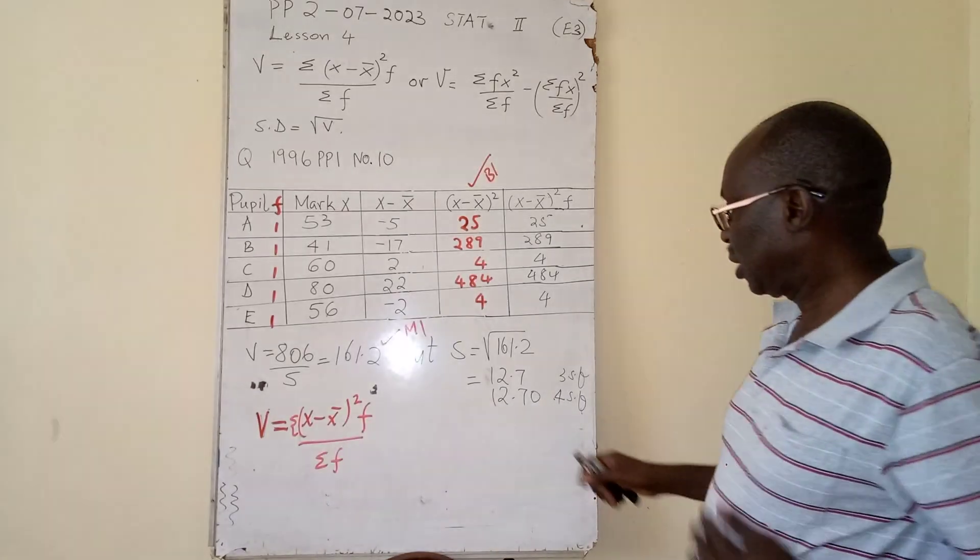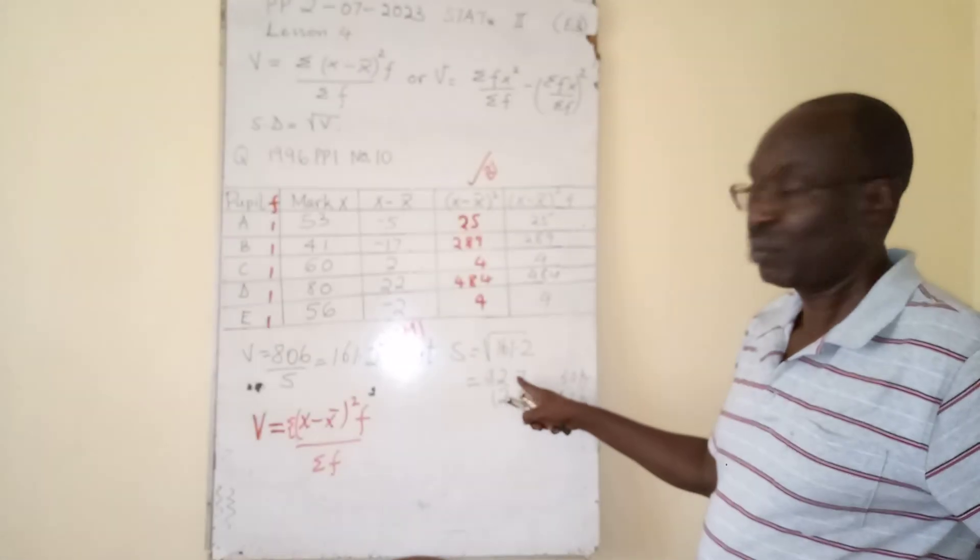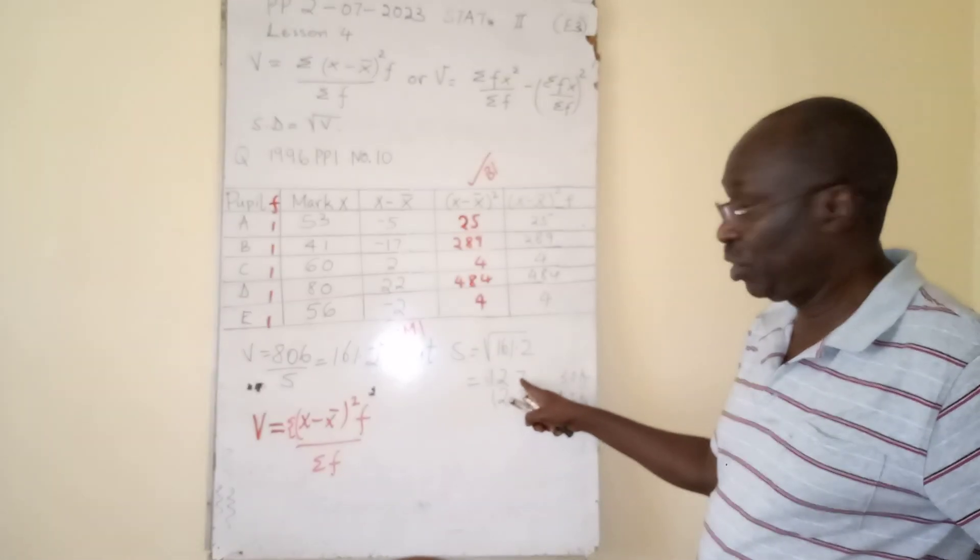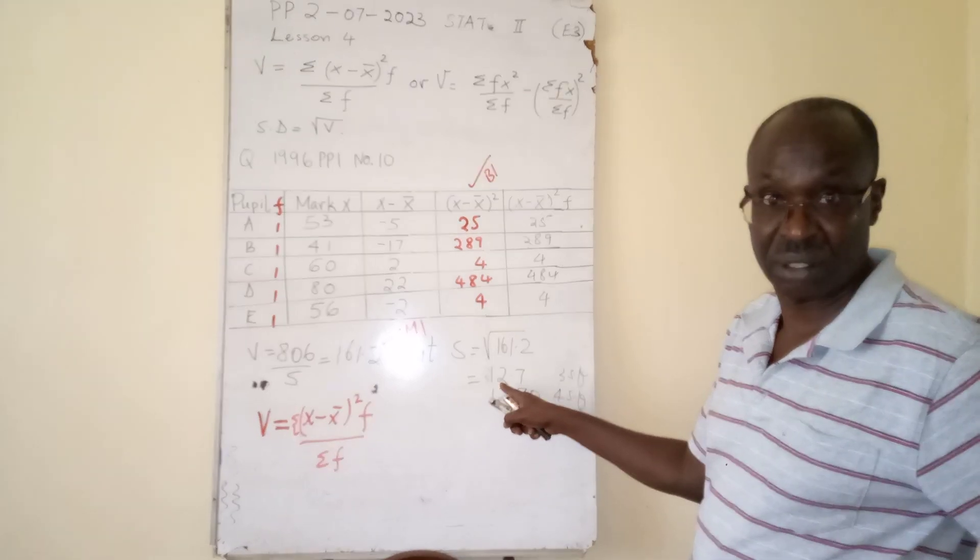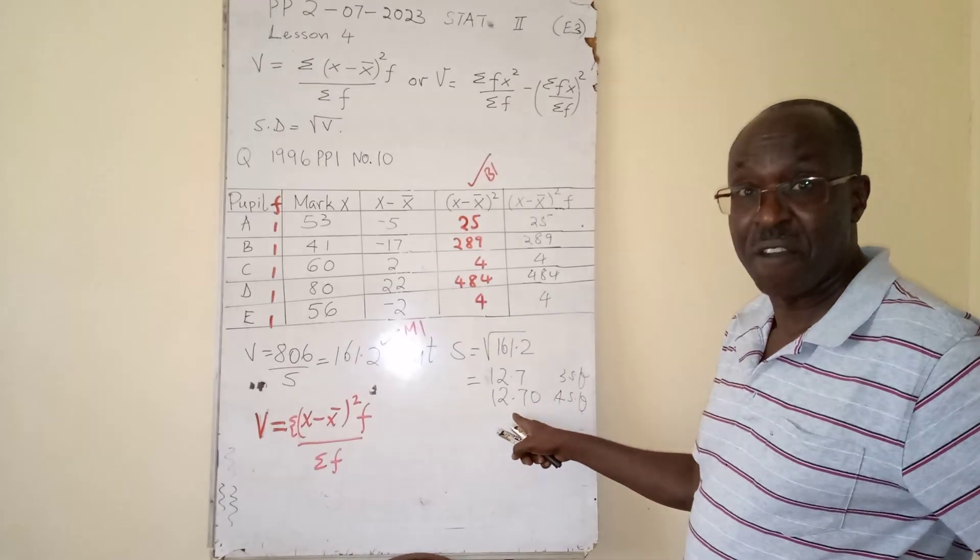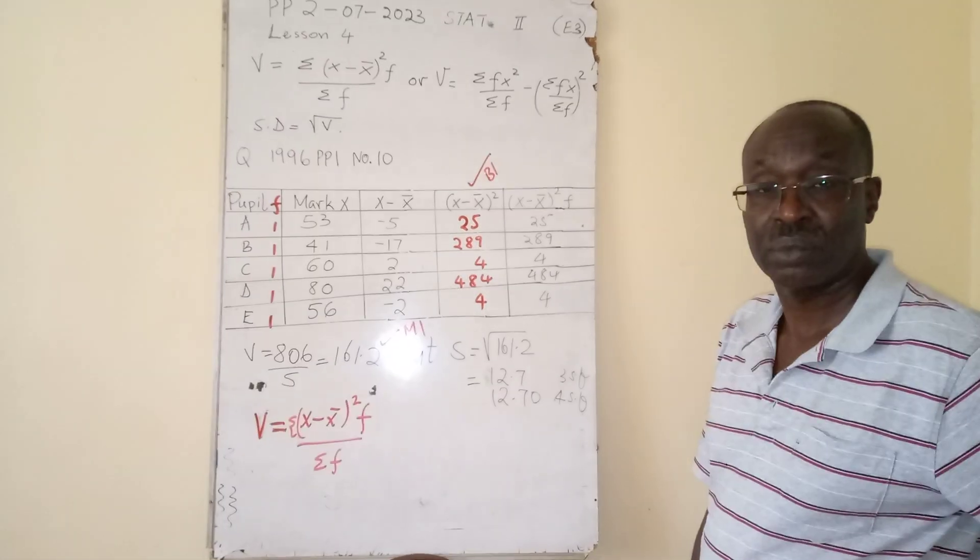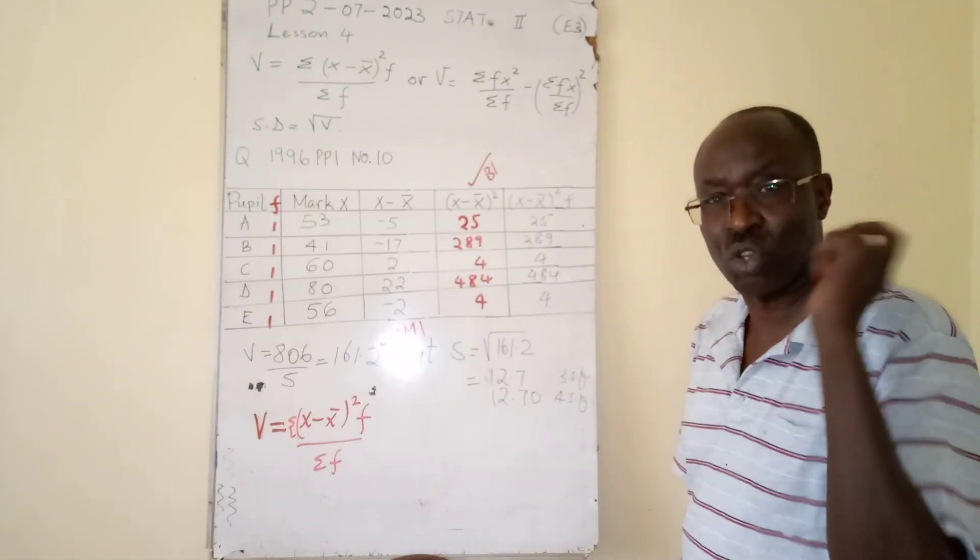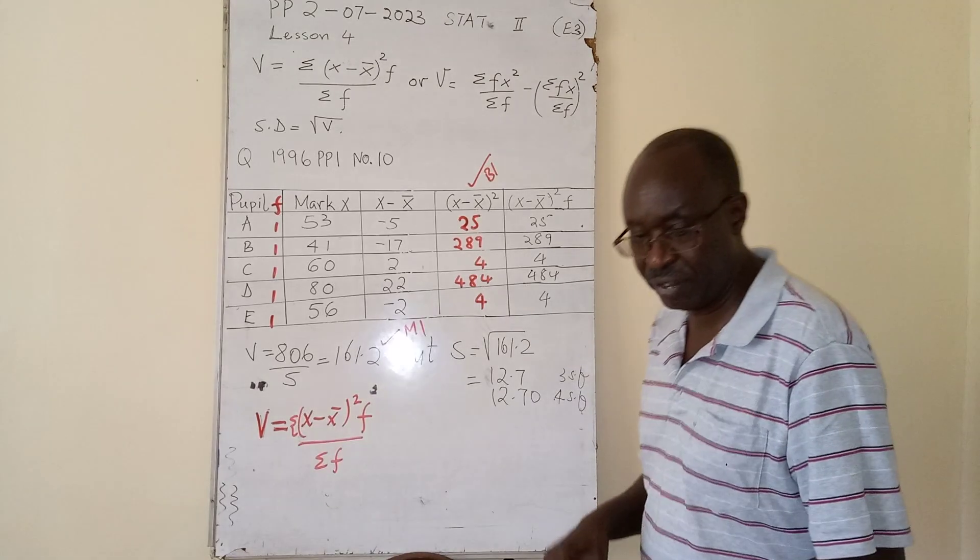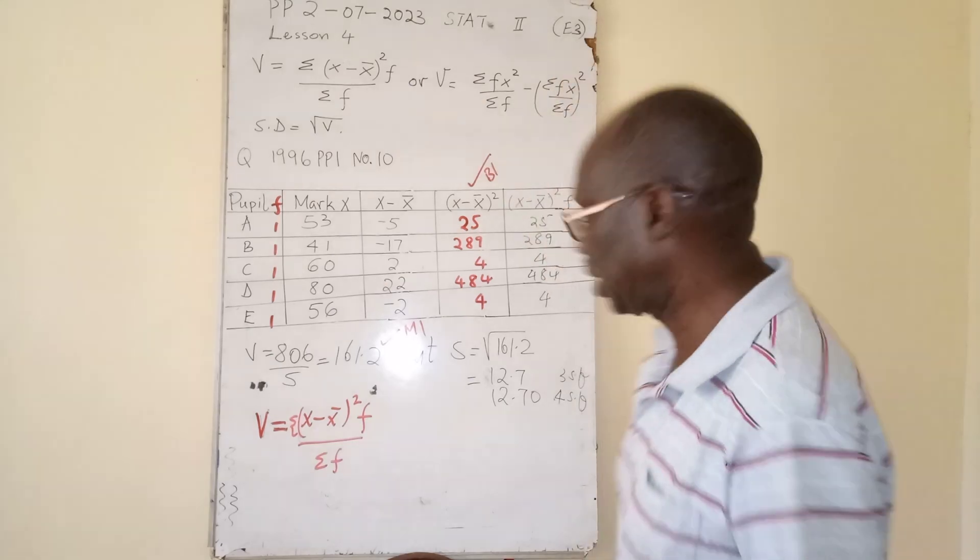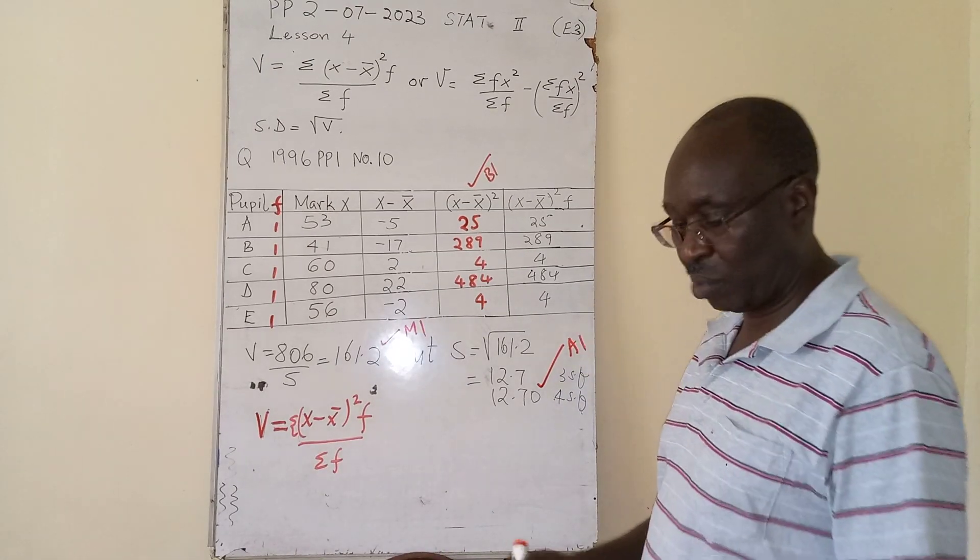Whenever you are finishing your question, you have to read what it asks. If asked to give it to 3 significant figures, this would be my answer. If asked for 2 significant figures it would be 13. If asked for 4 significant figures it would be 12.70. You must know how you finish your work depending on the condition that is given.